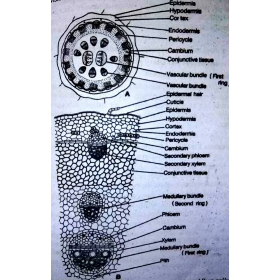The chlorenchyma is present in three to seven layers. Its cells are thin-walled, oval, and full of chloroplasts, so it helps in photosynthesis. It also includes many intercellular spaces. The third feature is the endodermis, which is clearly developed and made up of many tubular thick-walled cells.